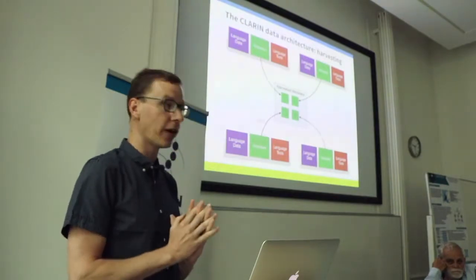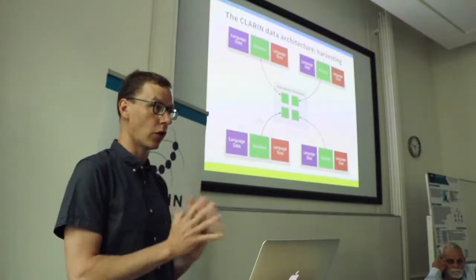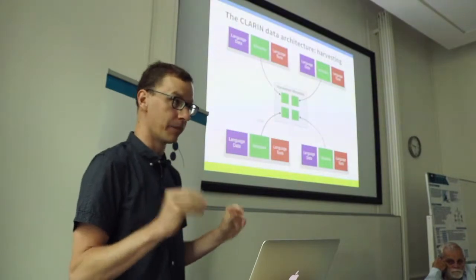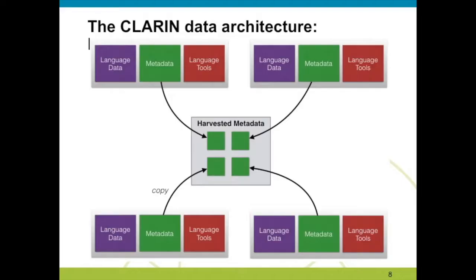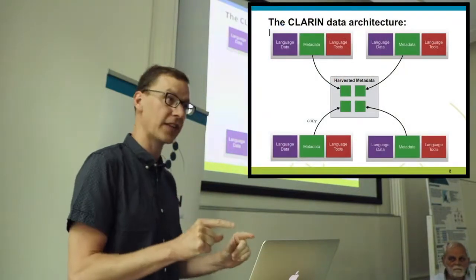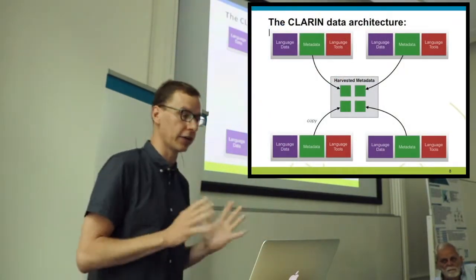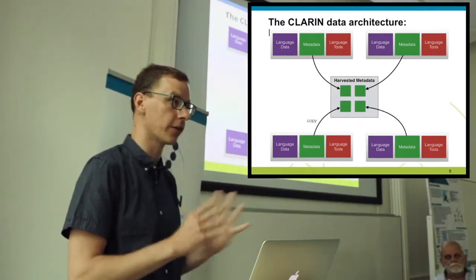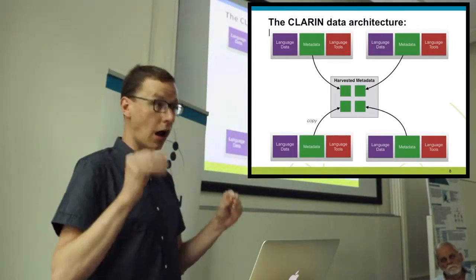The aim of CLARIN is bringing this all together and making it compatible. There's a very important role in our infrastructure for metadata. The idea is that every tool or data set is described with a metadata record, and the metadata should always be open so that centrally we can harvest the metadata records provided through the CLARIN centers. Currently we're harvesting about one million metadata records from all CLARIN centers and collaborating partners.